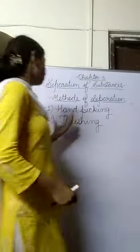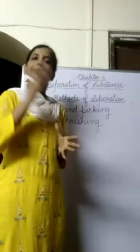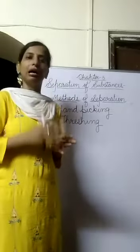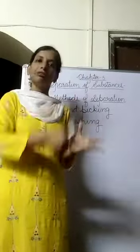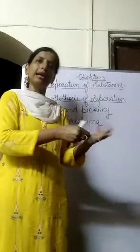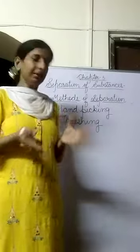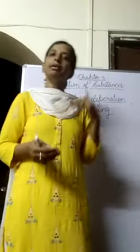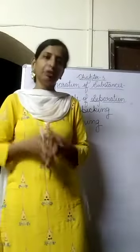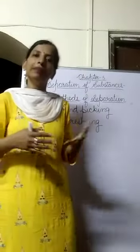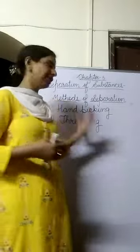So what we do is threshing. In threshing, the stalk of grain is beaten against a hard object. When we beat the stalk of grain against any hard object, the grains separate out and come out. Earlier, threshing was done either by human power or by the use of bullocks.